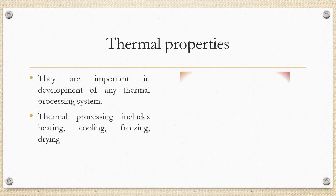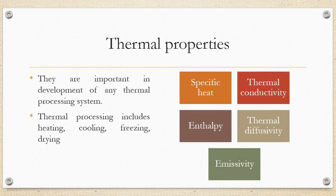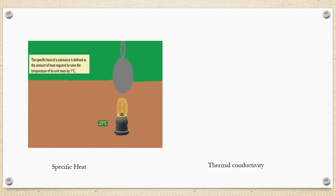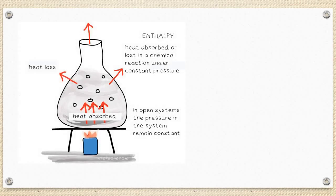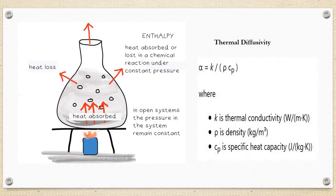Thermal properties are important in development of any thermal processing system. Thermal processing includes heating, cooling, freezing and drying. Thermal properties are the specific heat, thermal conductivity, enthalpy, thermal diffusivity and emissivity. Specific heat of a substance is defined as the amount of heat required to raise the temperature of a unit mass by 1 degree centigrade. Whereas thermal conductivity is the ability of a material to conduct heat. Enthalpy is referred as the heat absorbed or lost in a chemical reaction under constant pressure. In open system, the pressure in the system remains a constant. Whereas thermal diffusivity shows the relationship between the ability of the material to conduct heat to its ability to store heat.